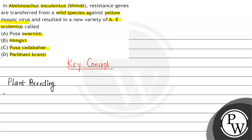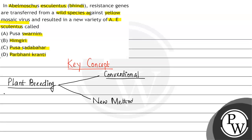We need to understand what type of plant breeding gave resistance to yellow mosaic virus in Abelmoscus esculentus, and what is the name of the new species created. Plant breeding has two processes: one is conventional plant breeding (old techniques), and the other includes new methods such as mutation breeding and genetic engineering.